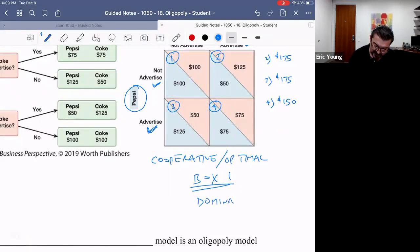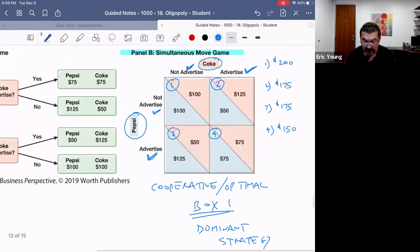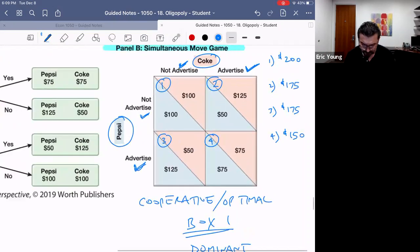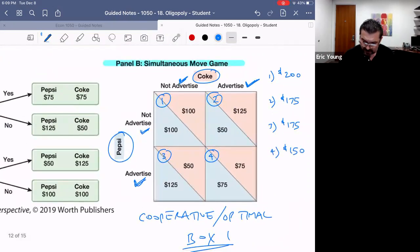And that dominant strategy, sadly for their profit lines, is to advertise. You don't believe it? Let's take a quick look. Let's just say hypothetically that Coke decides to not advertise. Coke can say, 'We're not going to advertise.' If Coke does not advertise and Pepsi doesn't, Pepsi makes a hundred dollars. Pepsi in this case is taking advantage of Coke.